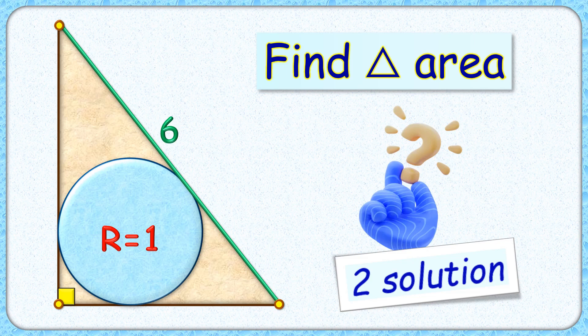Welcome everyone to this interesting question where given is a right angle triangle with hypotenuse length as 6 cm and incircle radius as 1 cm. The exciting part is with this limited data we have to find the area of this right angle triangle.